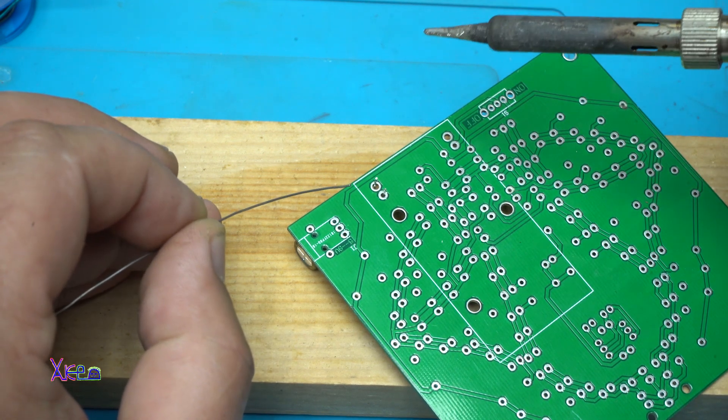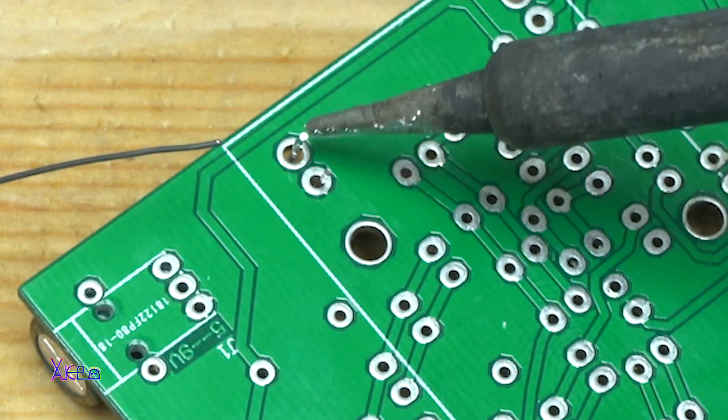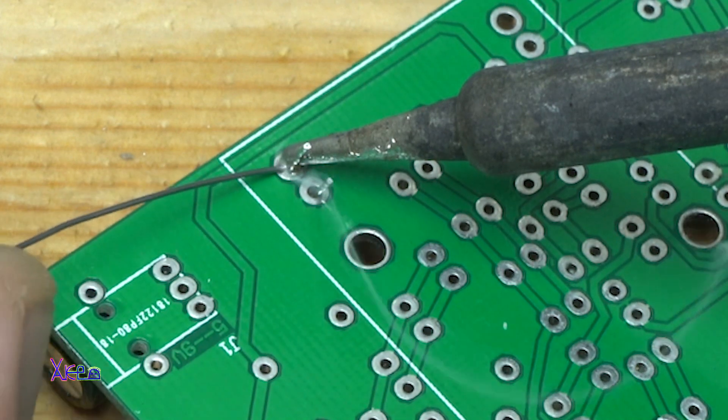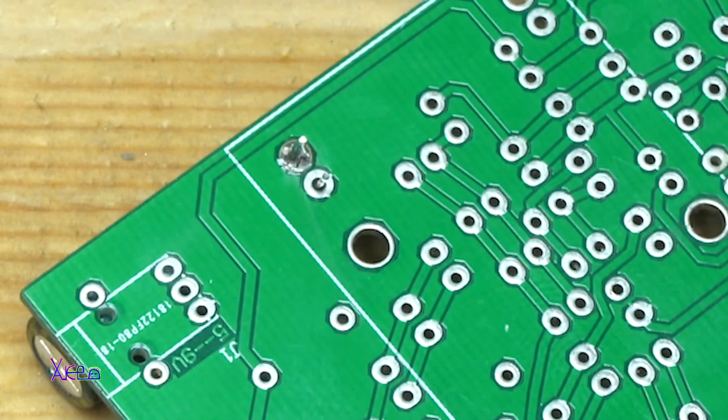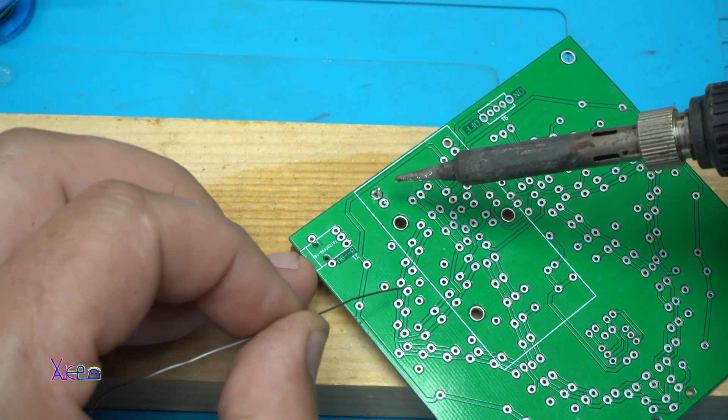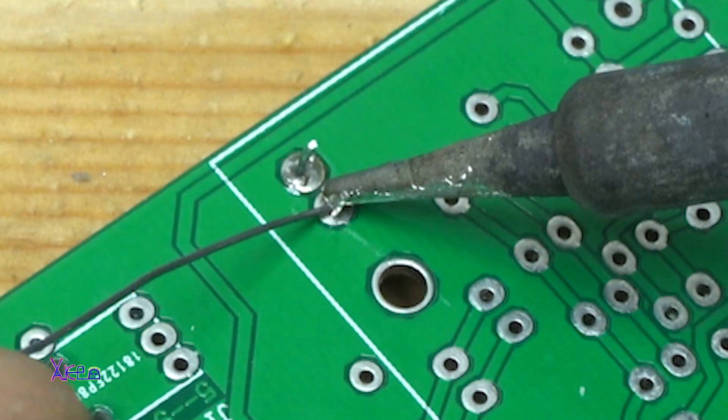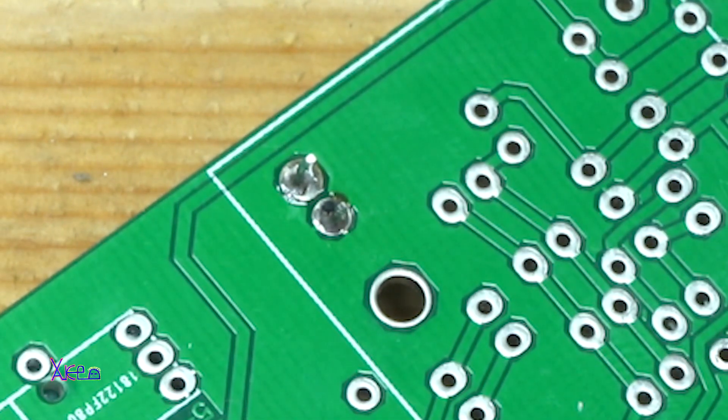First you need for very short time, about one second, maximum two seconds, to hit the spot. And then add the soldering tin. And that's it. Take a look. First you hit the soldering pad for one second. Add some tin. Remove it. That's it.